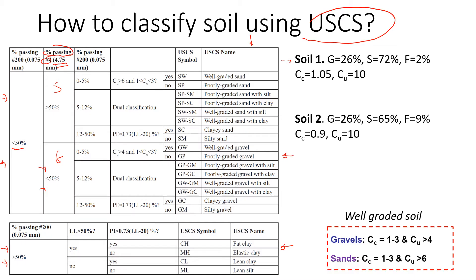Starting with Soil 1: we have 26 percent gravel, 72 percent sand, and only 2 percent fines. Because less than 50 percent passes through the 0.075 mm sieve — the boundary between coarse-grained and fine-grained soil — more than 50 percent is coarse-grained, so we use the top part of the chart. We have more sand than gravel, so we go into the sand section.